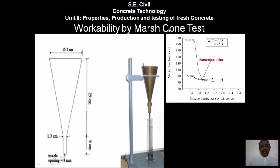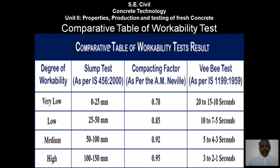Workability by marsh cone test: concrete is poured through a cone and the marsh flow time in seconds is recorded against the percentage of plasticizer, from which the saturation point is determined.